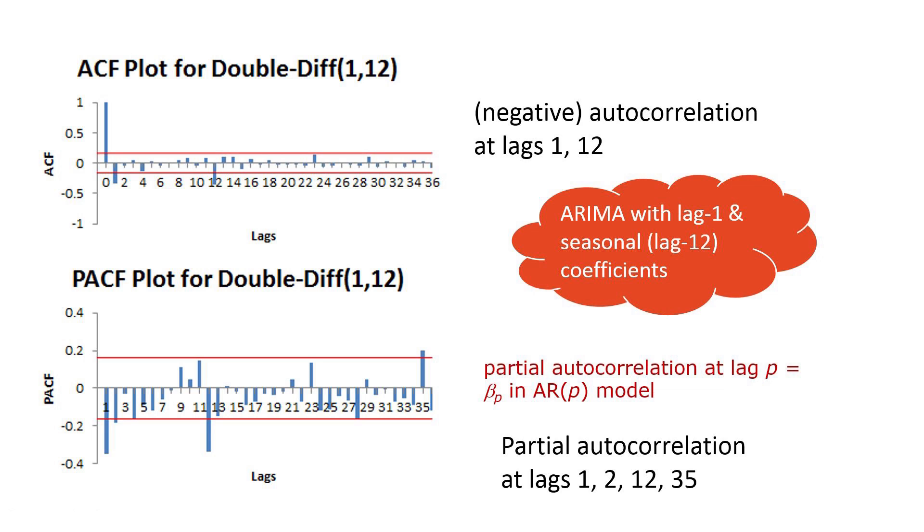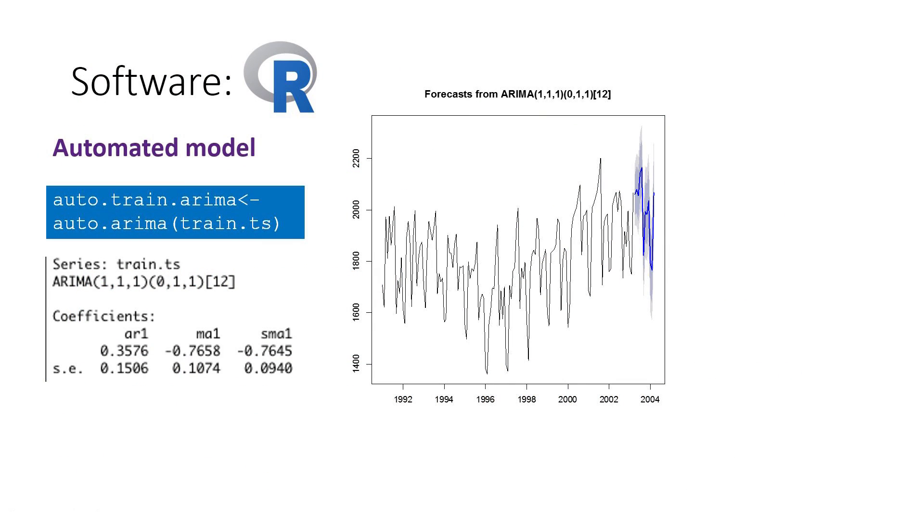Let's use automated software selection next. R's forecast package has a function called auto.arima that performs automated model selection. The user must specify a time series object. If the time series is monthly, auto.arima will also try 12-month seasonal ARIMA models. In our case, the result of the automated model selection is an ARIMA 1,1,1, 0,1,1 model.